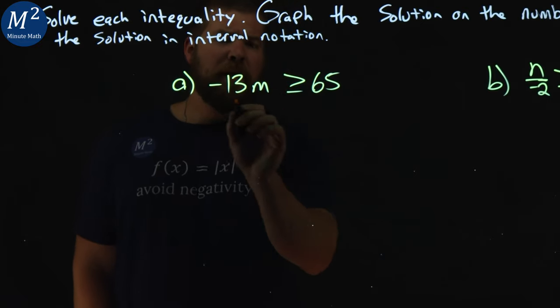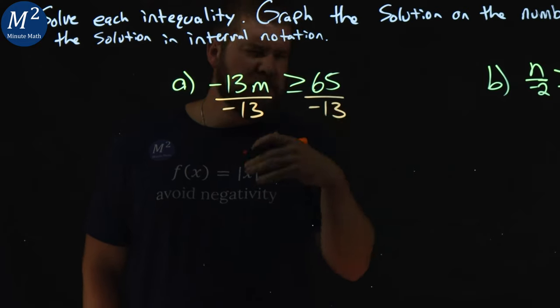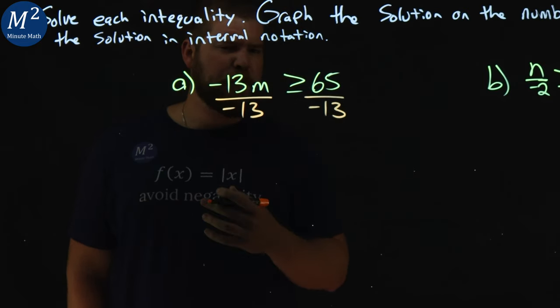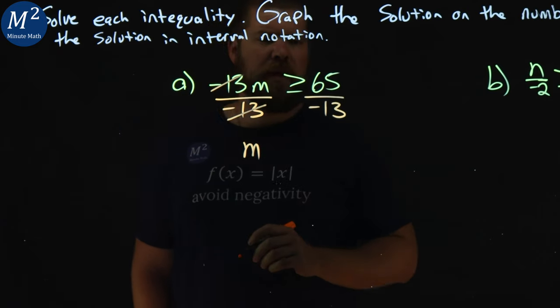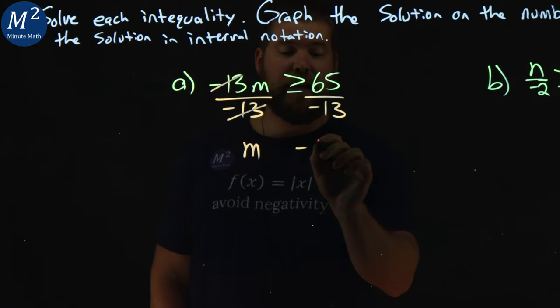Now to get m by itself, I'm going to divide both sides by negative 13, just like we always do when solving for something. Opposite of multiplication is division. m comes down by itself, these negative 13s cancel, and on the right hand side, 65 divided by negative 13 is negative 5.